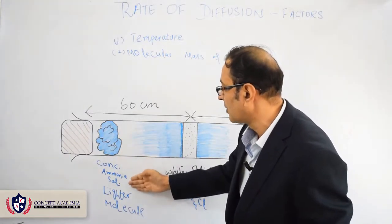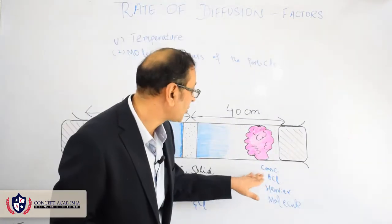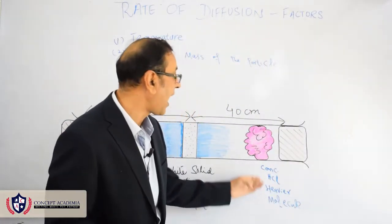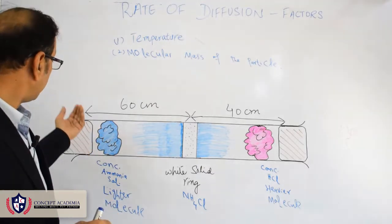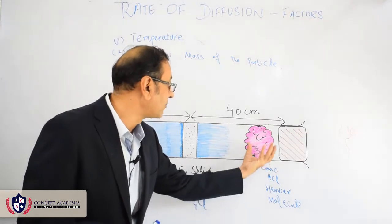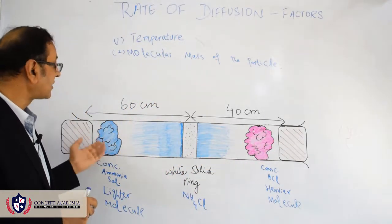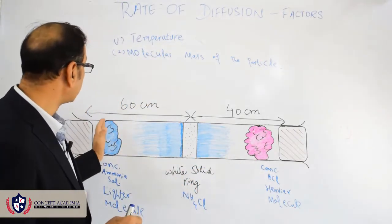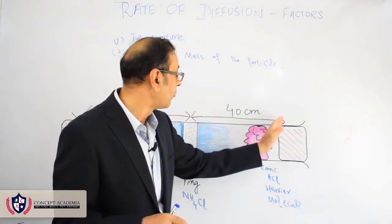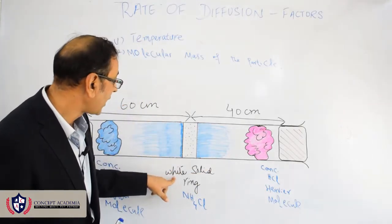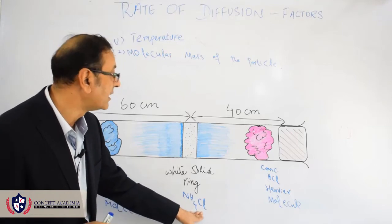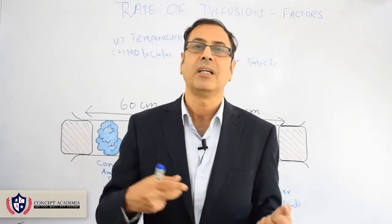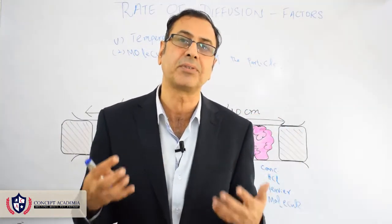As an example, consider a one-meter-long tube. On one side there is concentrated ammonia solution and on the other side is concentrated hydrochloric acid. Ammonia is lighter compared to hydrochloric acid, which is heavier. Because ammonia is lighter, it moves faster — ammonia molecules cover 60 centimeters and hydrochloric acid molecules cover 40 centimeters. A white solid ring of ammonium chloride is formed, showing that ammonia molecules, being lighter, move faster and show a higher rate of diffusion.